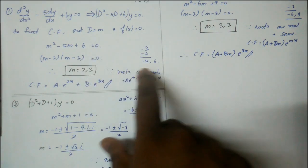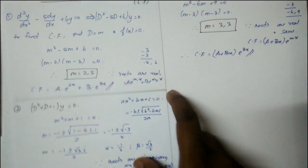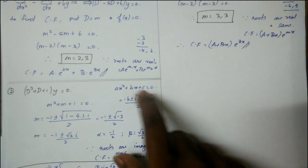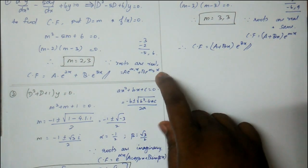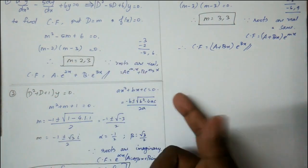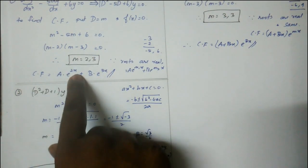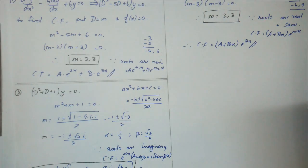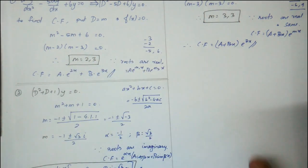The roots are m = 2, 3. Since the roots are real and different, the formula is Ae^(m₁x) + Be^(m₂x). The answer is Ae^2x + Be^3x. You can write Ae^3x + Be^2x, either order is fine.